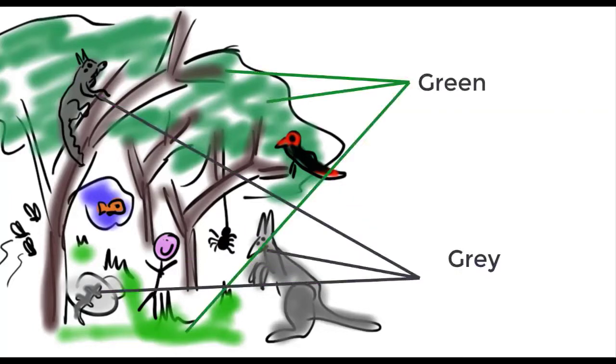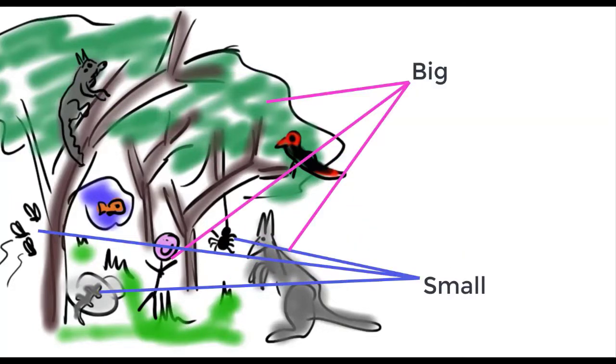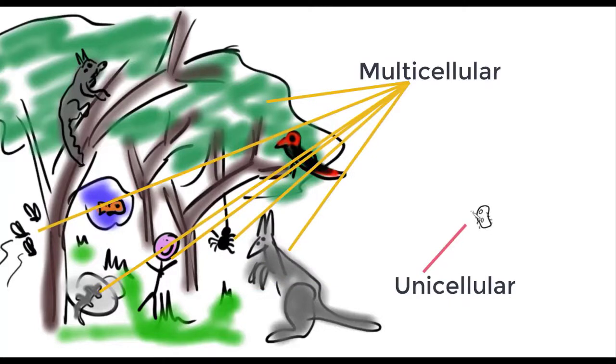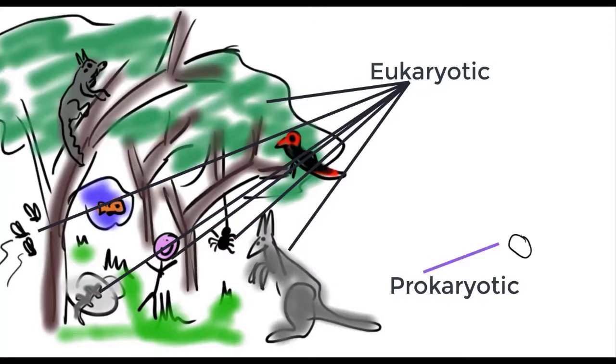You could classify them by color, by size, by whether they're multicellular or unicellular, or whether they're eukaryotic or prokaryotic. In biology we have a lot of different ways of classifying things and sometimes they will overlap.